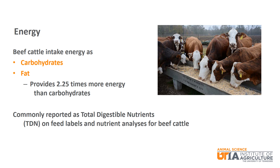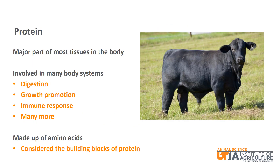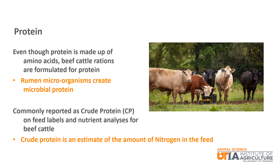There are other measures of energy that are used for other species. Protein is another important nutrient that is a major part of most tissues in the body. It is involved in digestion, growth promotion, immune response, as well as many other body functions. The building blocks of protein are called amino acids. Although protein is made up of amino acids, beef cattle rations are typically formulated for protein instead of specific amino acids, due to the ability of rumen microorganisms to create microbial protein. With respect to formulating and reporting on feed mixes for beef cattle, protein is commonly referred to as crude protein, or CP.